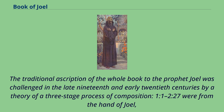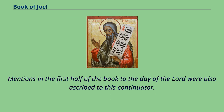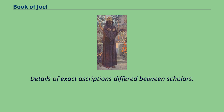The traditional ascription of the whole book to the prophet Joel was challenged in the late 19th and early 20th centuries by a theory of a three-stage process of composition: 1:1–2:27 were from the hand of Joel and dealt with a contemporary issue; 2:28–3:21 and 3:1–4:21 were ascribed to a continuator with an apocalyptic outlook. Mentions in the first half of the book to the day of the Lord were also ascribed to this continuator, while 3:4–8 (4:4–8) could be seen as even later. Details of exact descriptions differed between scholars.